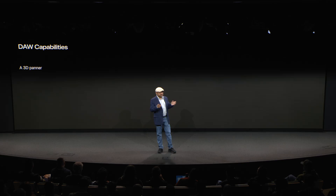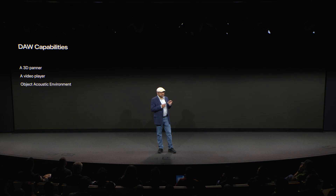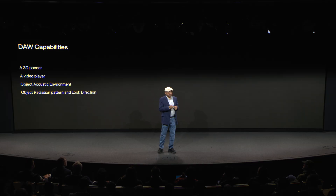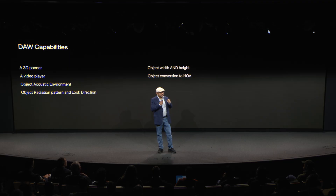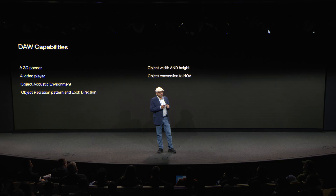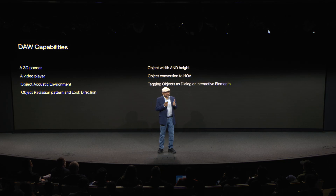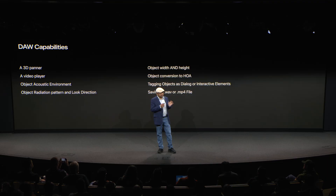Both tools provide a 3D panner for positioning audio objects in 3D space at any distance; a video player allowing objects to be overlaid on video, synced with the panner; the ability to describe the acoustic environment for objects; a radiation pattern and look direction for each object; object width and height; and the ability to convert objects to HOA via room simulation — which allows accurate reverb critical for externalization. HOA signals can also be manipulated in various ways, objects tagged as music and effects, dialogue, or interactive elements. Finally, everything is saved to a broadcast WAV file or optionally to an APAC-encoded MP4 file.